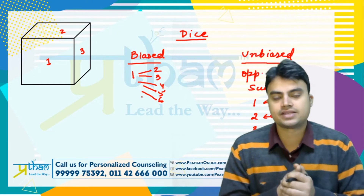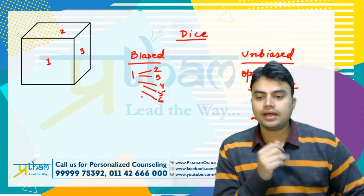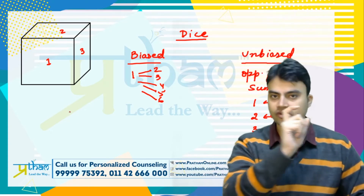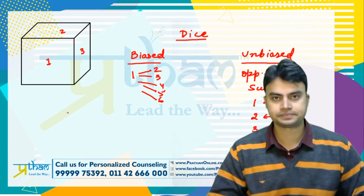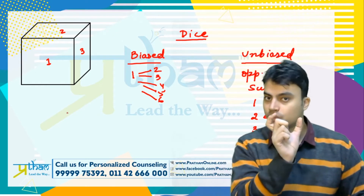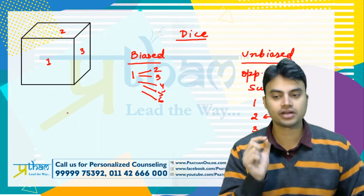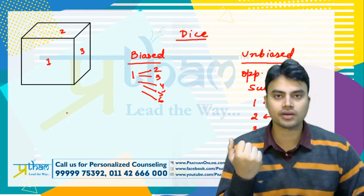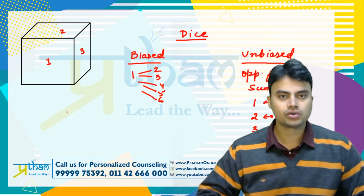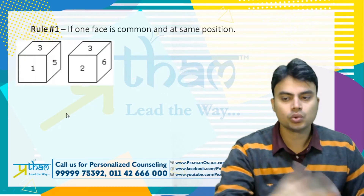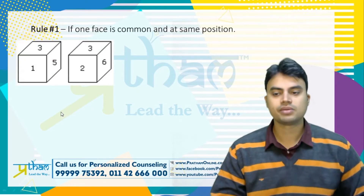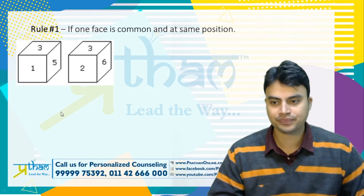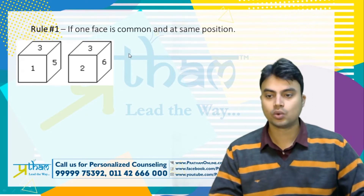So here, questions will ask that a die was rolled two or three times, and different faces were captured each time. On the basis of those images, you will be asked to figure out what is opposite to a given face. There are certain short trick rules — if we apply those rules, we can see how easily we can solve these questions. So first of all, let's see rule number one.